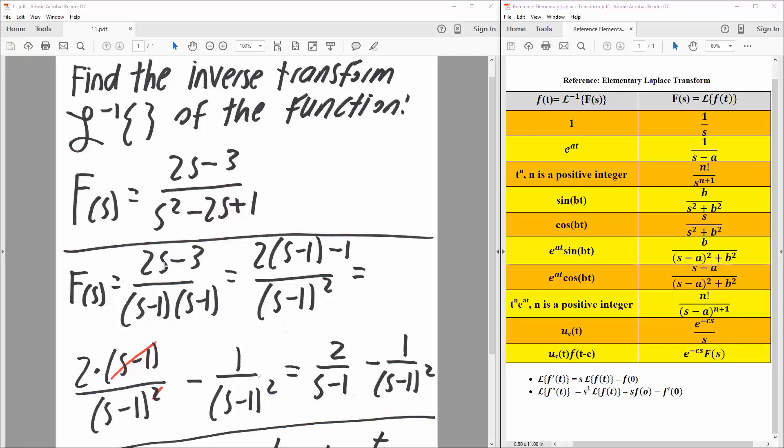The numerator will keep the same: 2s minus 3, just for now at least. Now we will factor the denominator. We can say s minus 1 times s minus 1, and next we are going to play around with this in order to make it relate to what we have.